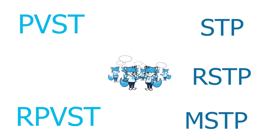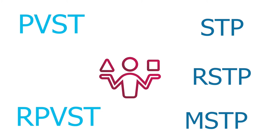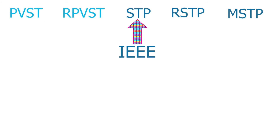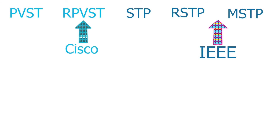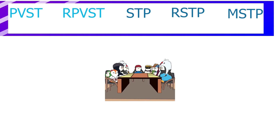Now we have briefly discussed all STP variations. Let's compare them and understand their similarities and differences. We have five STP variations: IEEE's STP, Cisco's PVST, IEEE's RSTP, Cisco's RPVST, and IEEE's MSTP. First, let us understand the similarities between these variations.